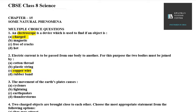Third is: the movement of the earth's plates causes cyclones, lightning, earthquake, or thunderstorms. So the right option here is C, that is earthquake. If there are plates in the earth, it can cause earthquake. Let's move on to question number 4.